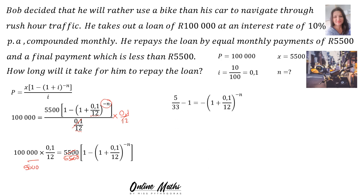When you do that, you find the answer is 5 over 33 minus 1. Now where does the minus 1 come from? The minus 1 is from this side of the equation — it walks over to that side and becomes minus 1. In the next step, 5 over 33 minus 1 is negative 28 over 33, and 1 plus 0.1 over 12 gives you 121 over 120. Now you have an exponential equation and you want to solve the exponent, so you will convert this into a logarithm.